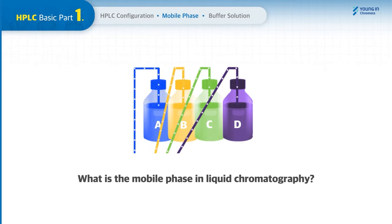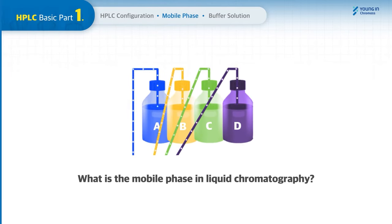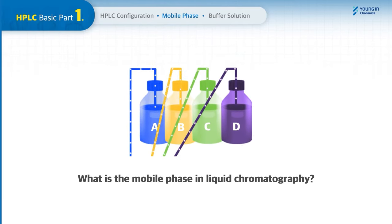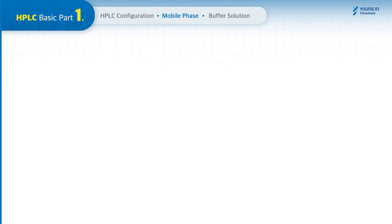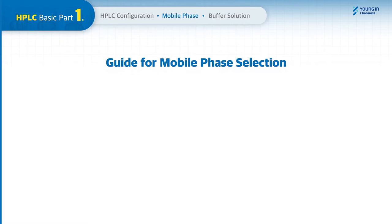What is the mobile phase in chromatography? The mobile phases are used to move the analytes to the column, and selecting the appropriate mobile phase is a key step because it can impact separation as well as retention time.